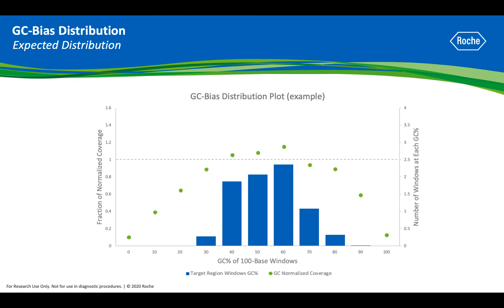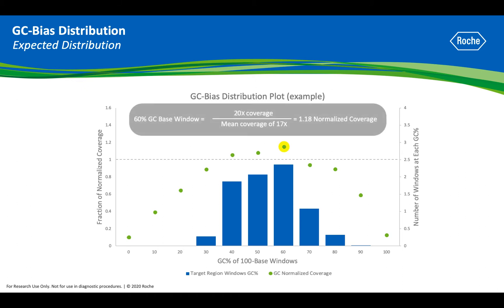This new distribution is what a typical example might look like for the normalized GC coverage of the reference genome. Let's look at the 60% GC window. The greatest number of windows fall in this GC percentage for the reference, so this region is likely to achieve more sequencing coverage compared to the mean. Thus, as might be expected, the normalized coverage here is greater than 1.